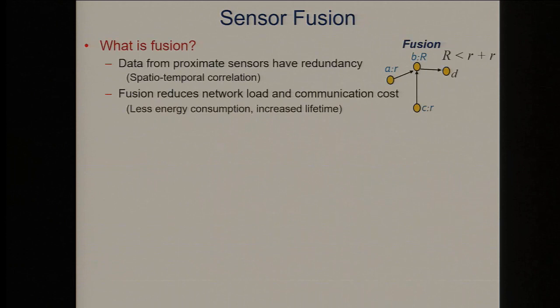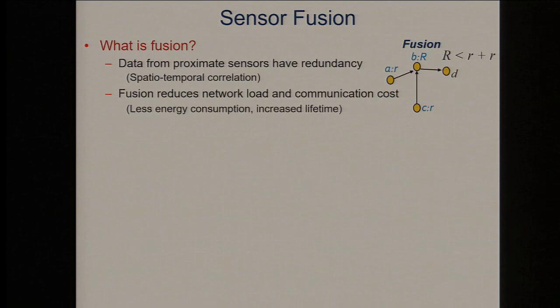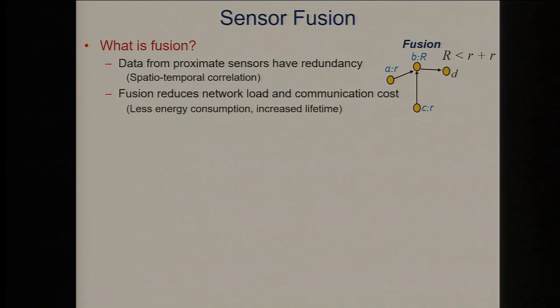What is fusion? A simple illustration: node A and node C are sampling R bits of data. If this is a fusion point and there is spatial-temporal correlation, what goes out should be less than 2R — otherwise it's additive because there's no correlation. A good fusion algorithm reduces the network load and communication. Data sensing takes energy, communication takes energy, and fusion or computation also takes energy. The objective is to reduce energy consumption — everything can be expressed in terms of bits of computation, sensing, communication, and nano-joules or micro-joules of energy.